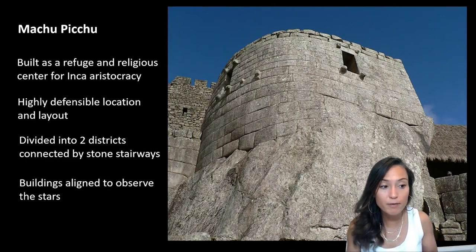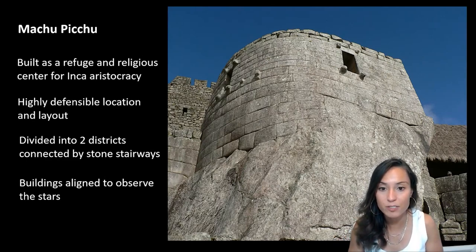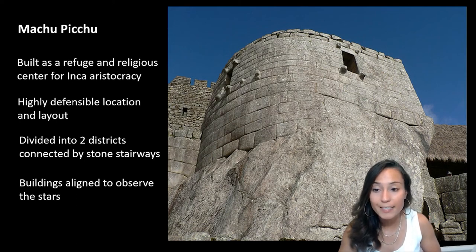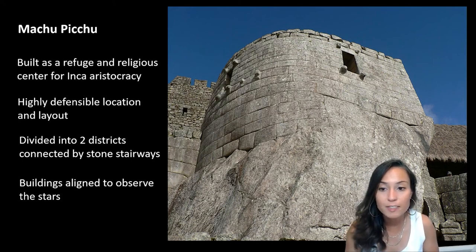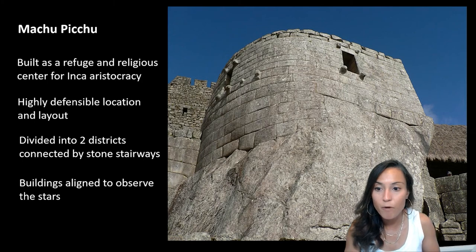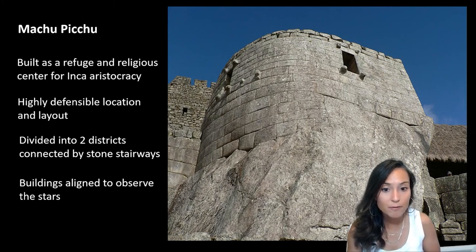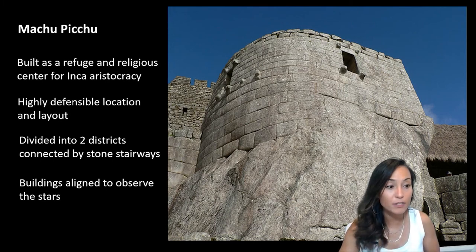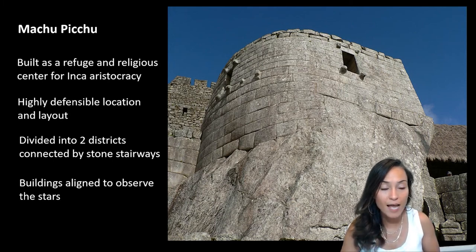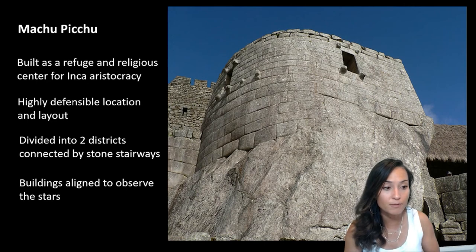Perhaps the most impressive structure at Machu Picchu is the torreon, a distinctive D-shaped bit of masonry. One of the windows of this tower is aligned with the Pleiades, allowing this building to serve as a key site for astronomical observations.